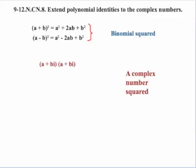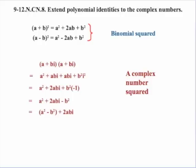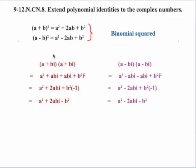What about a binomial squared? If we take a complex number squared — starting with a plus bi multiplied by itself — we use our distributive property, combine our middle terms, change i squared to negative one, and do some simplification. We get a squared plus 2abi minus b squared, which rearranges to give us a squared minus b squared as our real part and 2abi as our imaginary part.